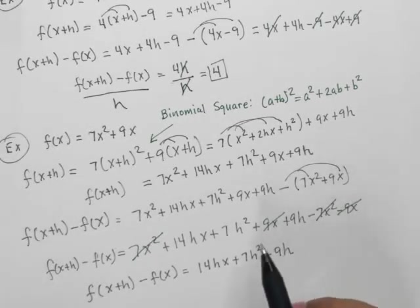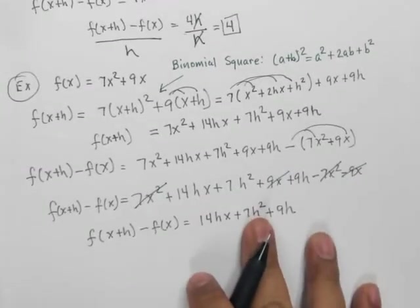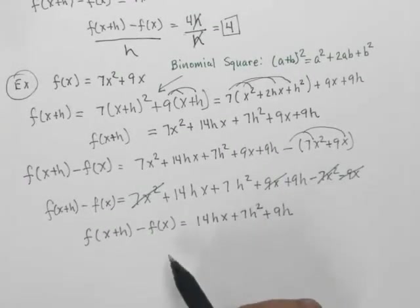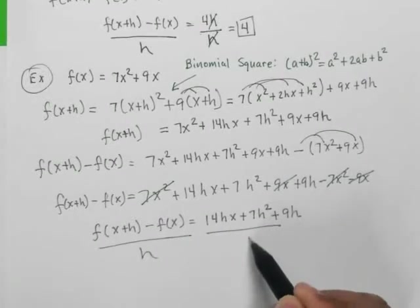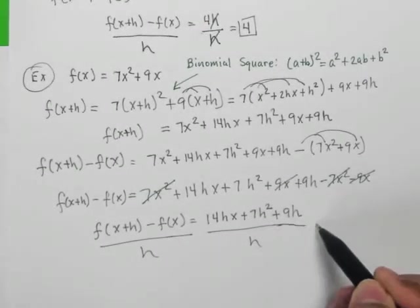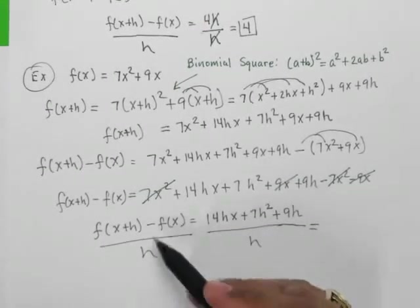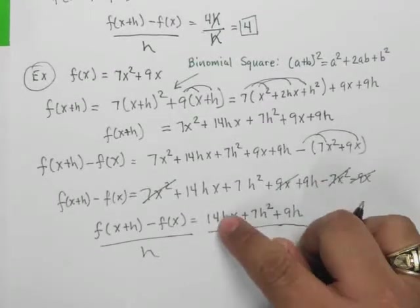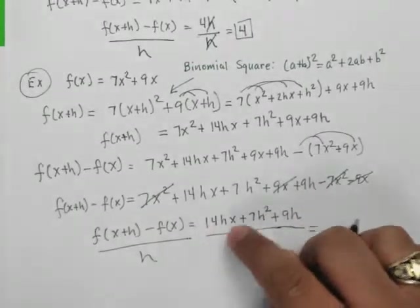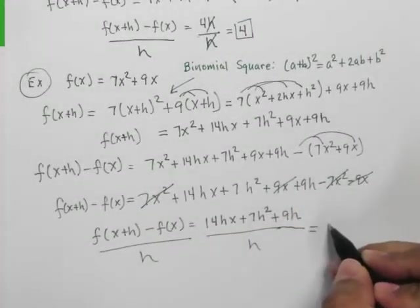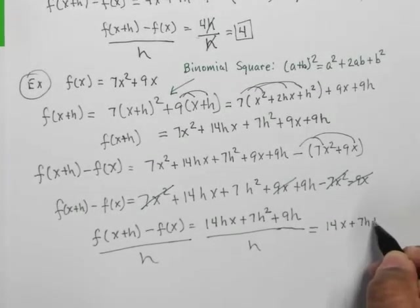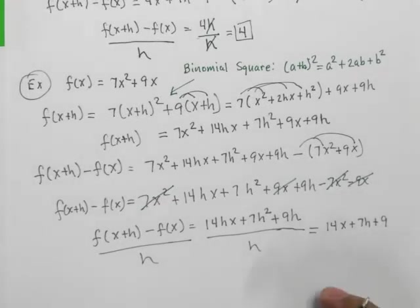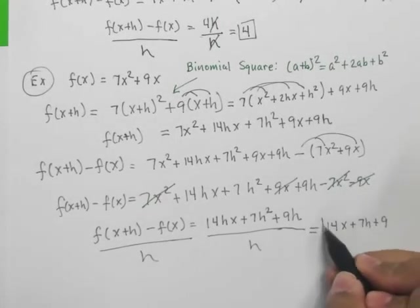And then the last part here is just to take the quotient now. So what we're going to do, just divide this guy by h, divide this guy by h. And when we do that, we have the difference quotient, and we're going to factor out or divide an h out from everything. So this is going to give me 14x plus 7h plus 9. So there's my difference quotient.